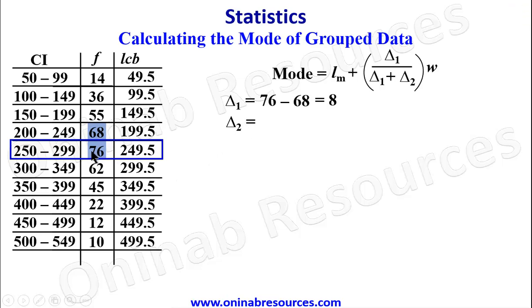Then for delta 2, it is going to be the frequency of the modal class and the class after it. So we find the difference between the two frequencies. That's going to give us 76 minus 62, and that gives 14.